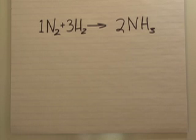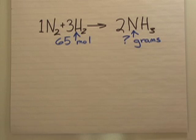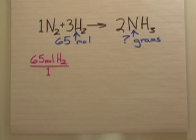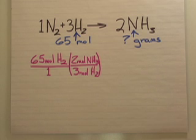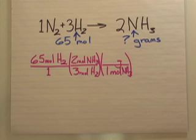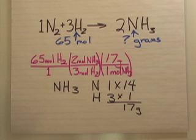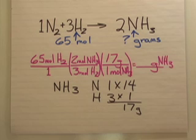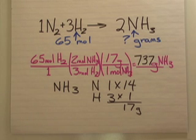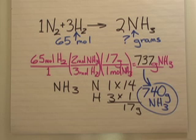Same equation, a bit more complexity. We're given 65 moles of hydrogen and want to find how many grams of ammonia that gives us. Start with 65 moles of hydrogen over 1. The mole ratio: for every 3 moles of hydrogen there are 2 moles of ammonia. But that's not far enough — we need grams per mole of ammonia. Nitrogen is about 14, hydrogen is 1, so ammonia is 17 grams per mole. Doing the math gives about 737 grams, but with only two significant figures in the 17, we round to 740 grams of ammonia. The coefficients 2 and 3 in the mole ratio don't count for significant figures.